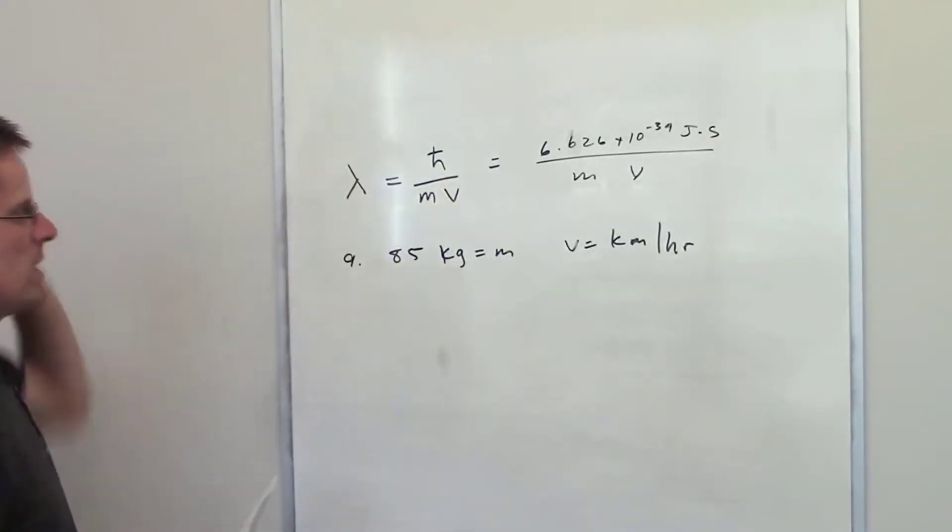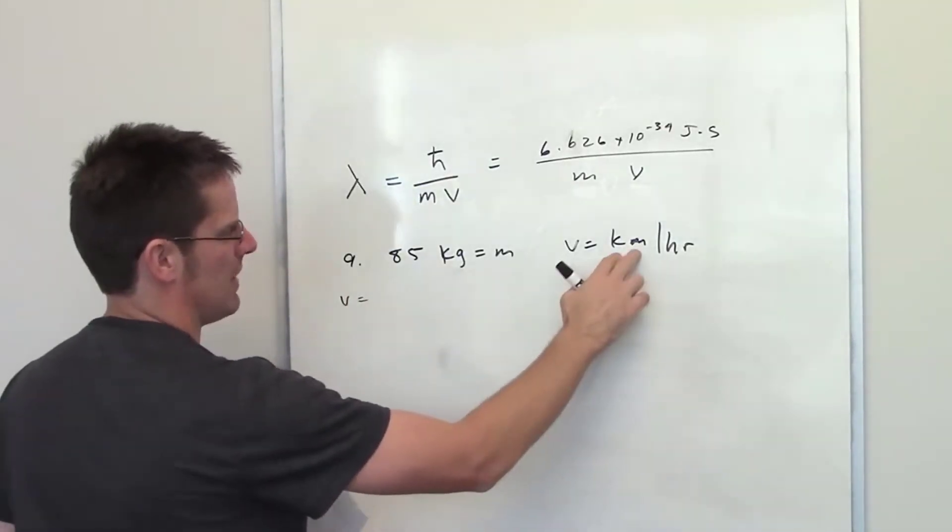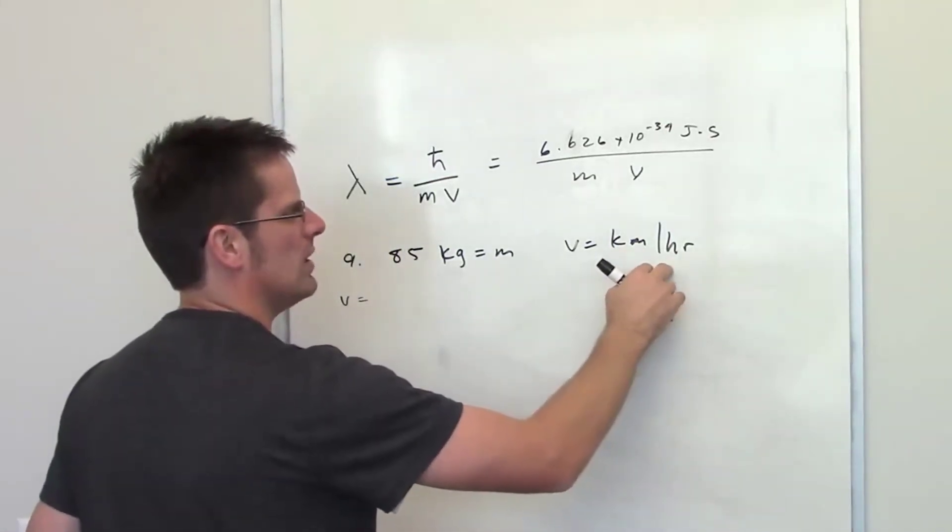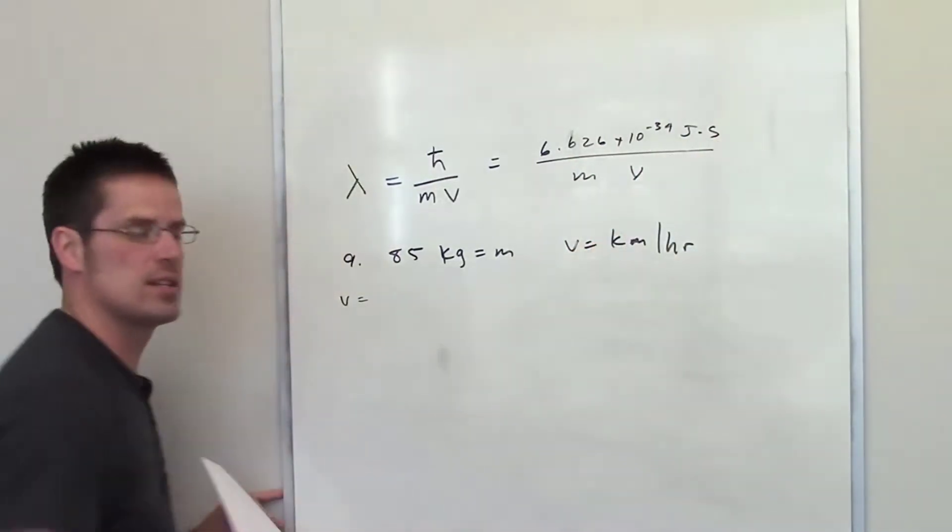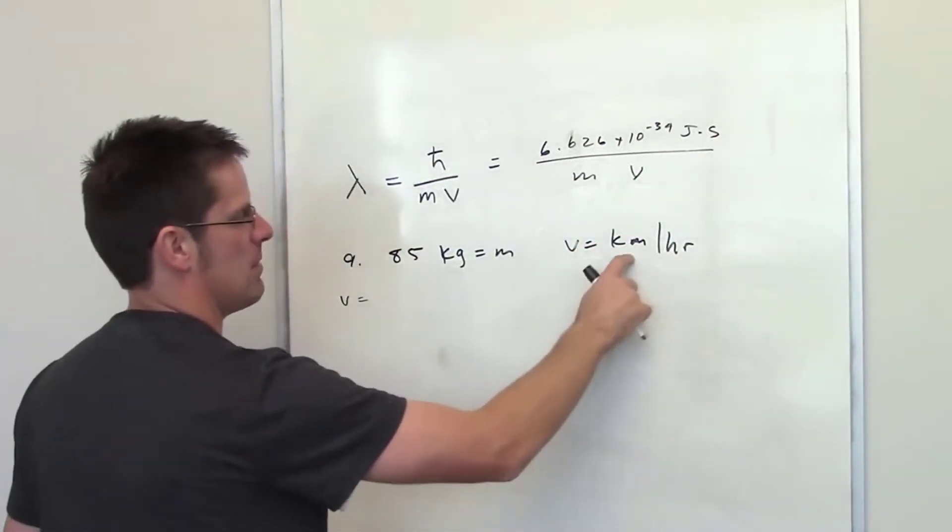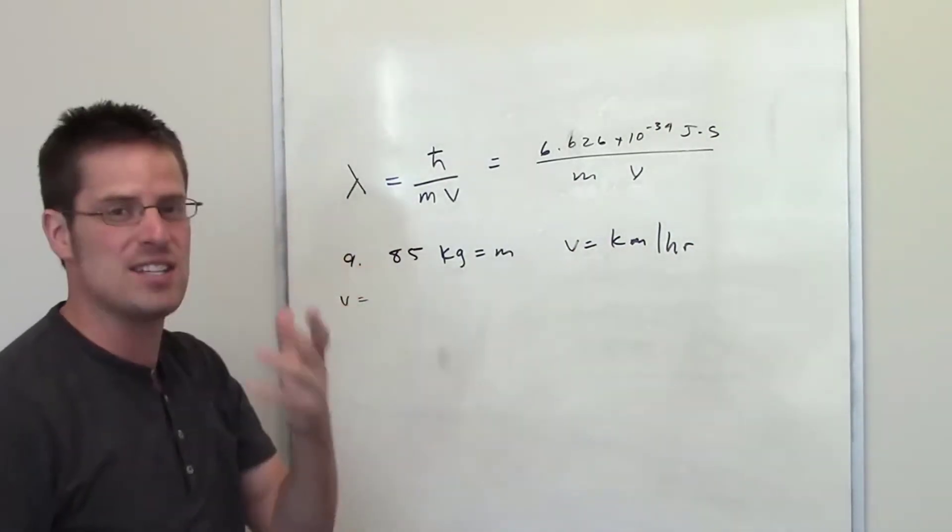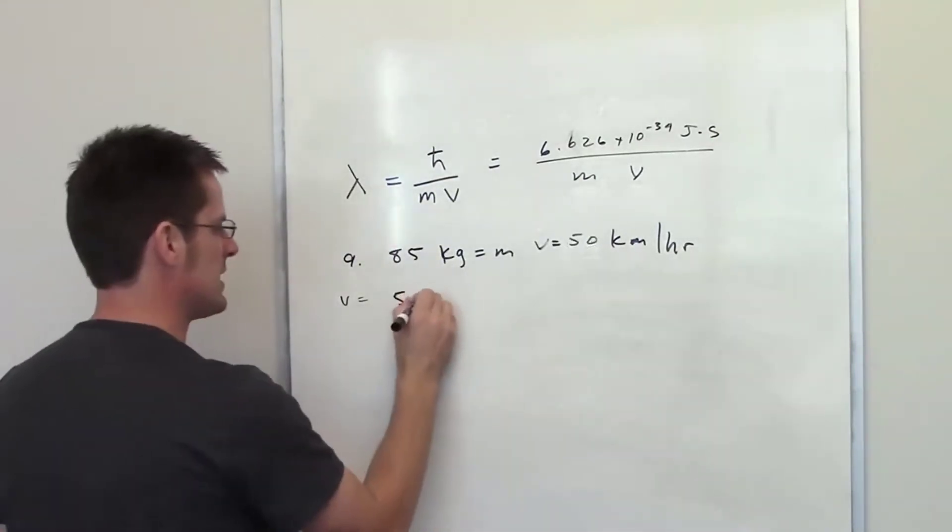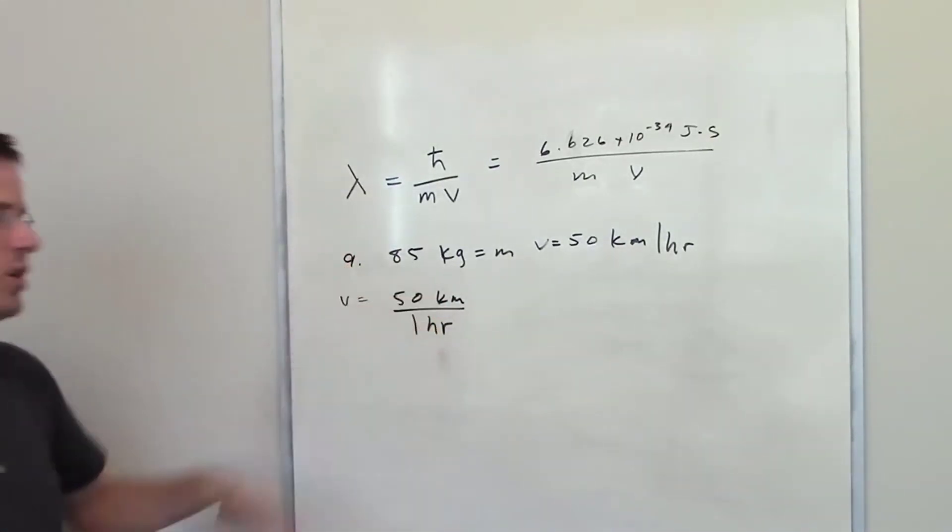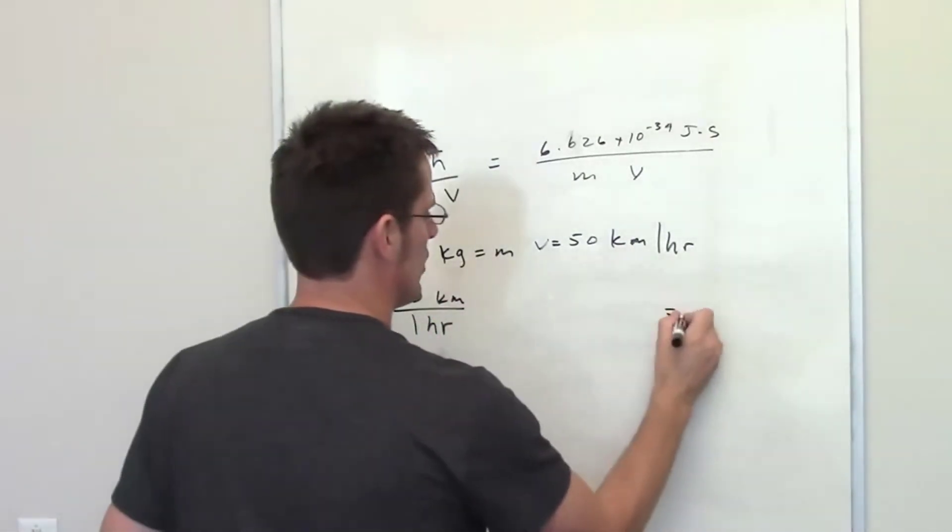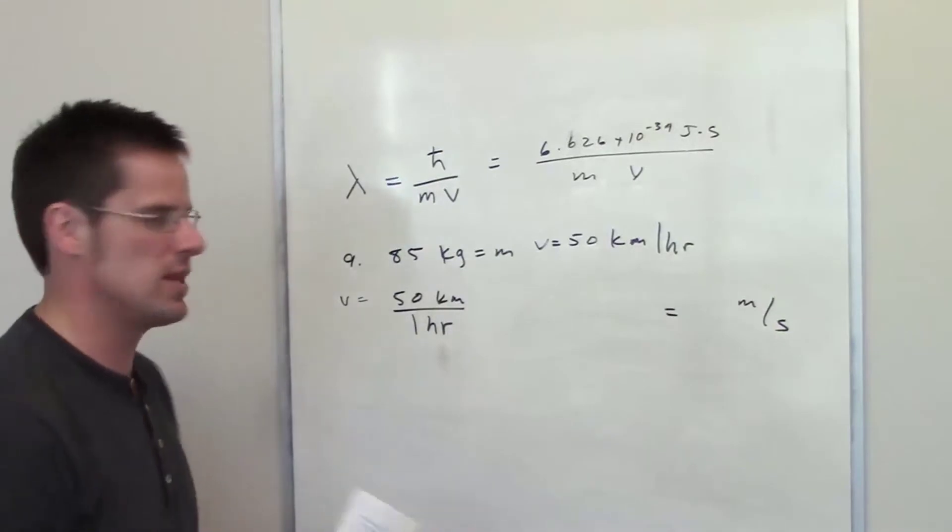The trick of doing all of this is that we want to make sure that all of our units match. I've got velocity in kilometers per hour. I don't have hours up here in the de Broglie relationship, I have seconds. So I'm going to have to account for that. I'm also going to probably want to convert kilometers to meters, because meters are the base SI units for length.